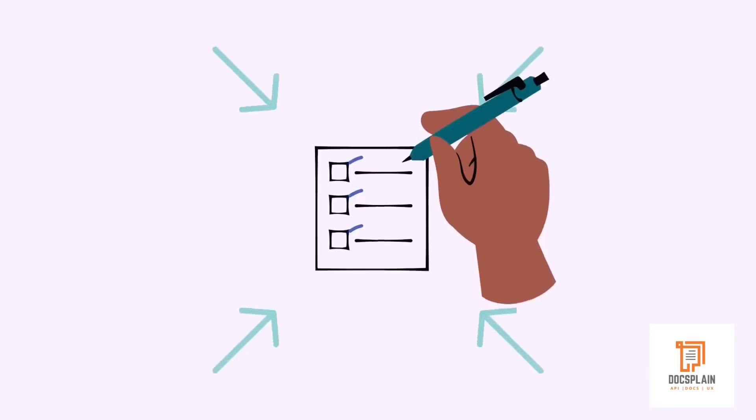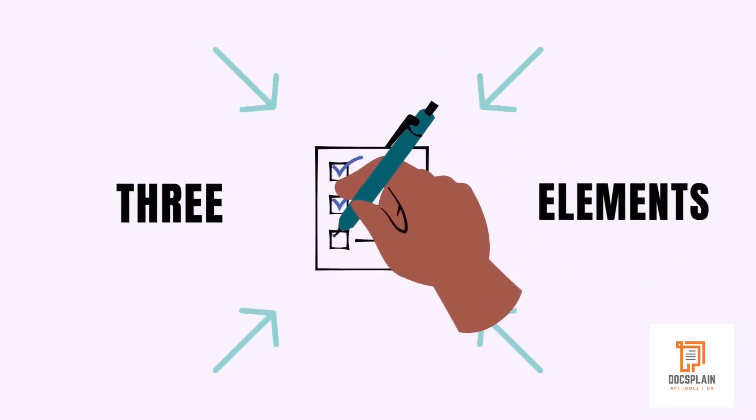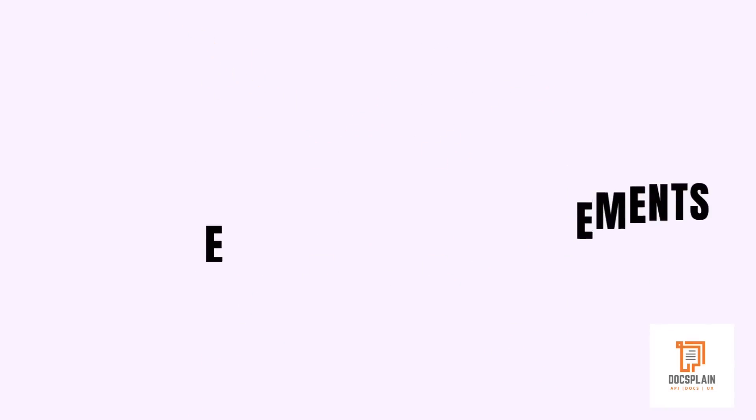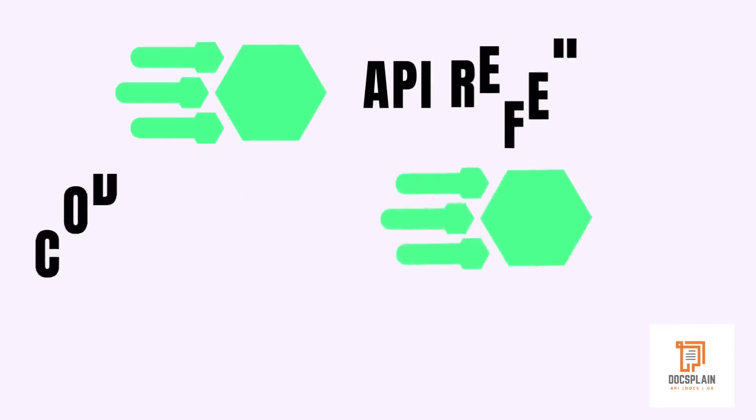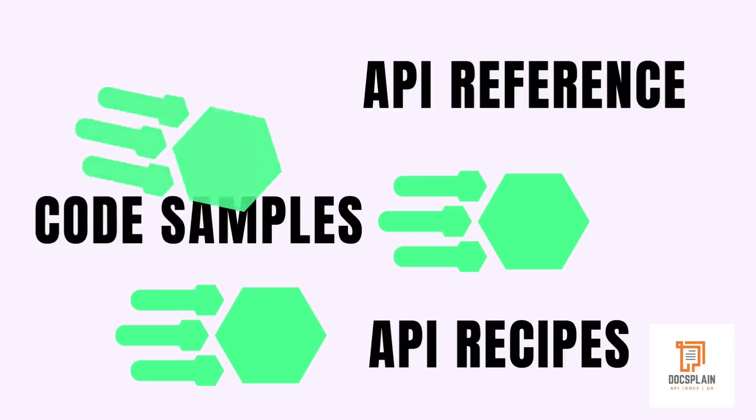You must understand the three key elements in API documentation: API reference, code samples, and recipes.